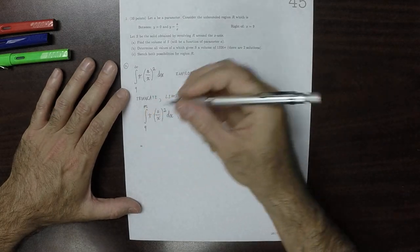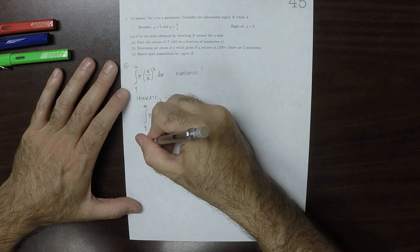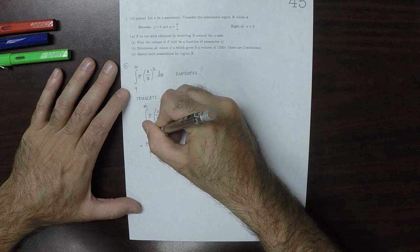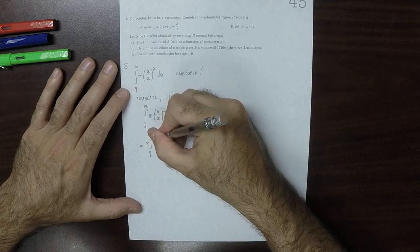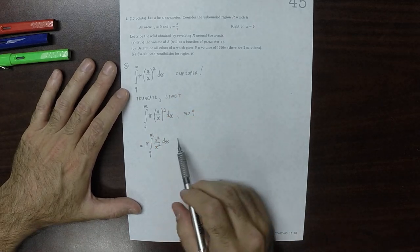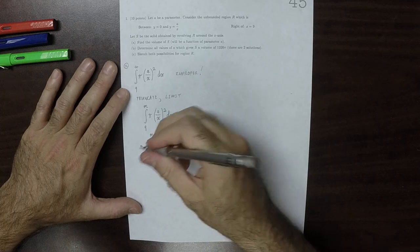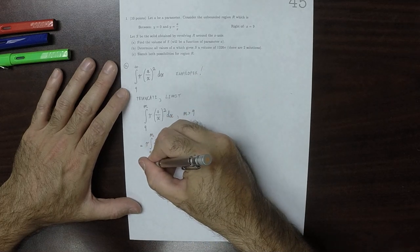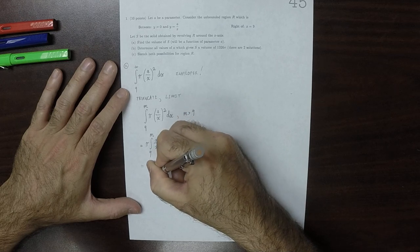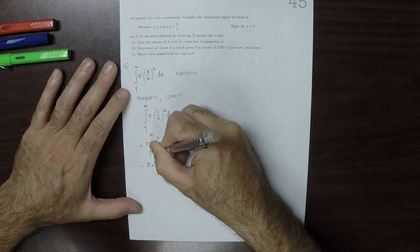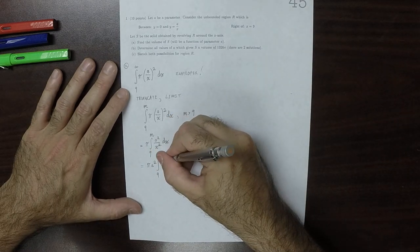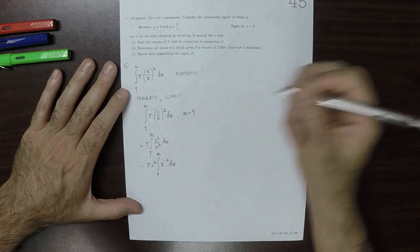Okay, now that is something that we can do. So this would be, well, the pi can come out. So that's 9 to m, and then a squared over x squared dx. A is constant with respect to x, so it can come out. So that's pi a squared, integral 9 to m, and then I'll write 1 over x squared as x to negative 2, dx.